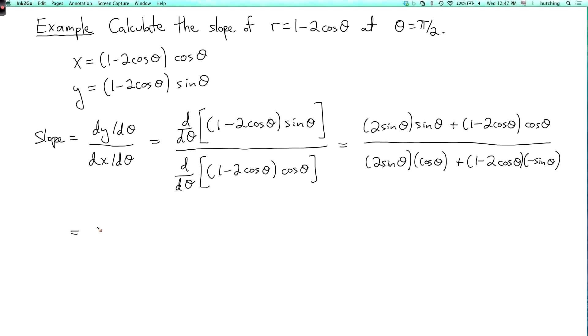So if I expand this out I get 2sin²(θ) plus cos(θ) minus 2cos²(θ).